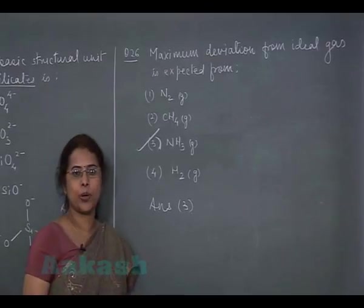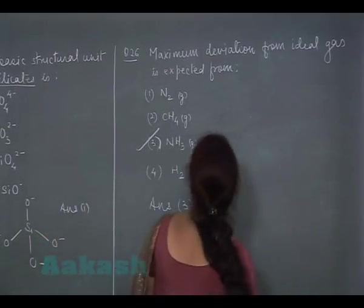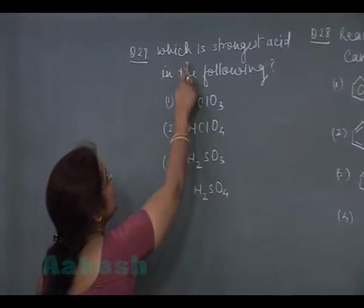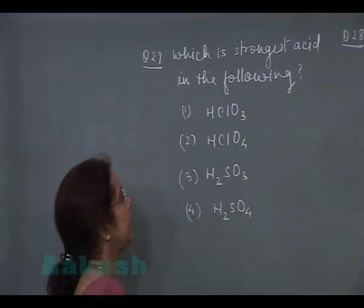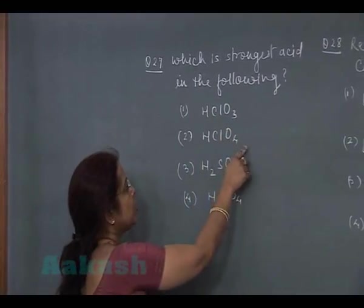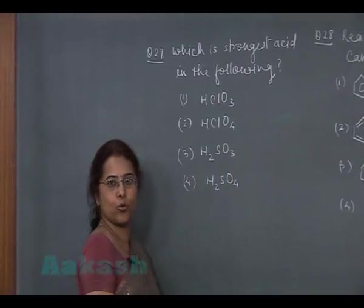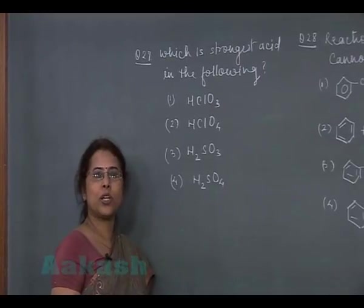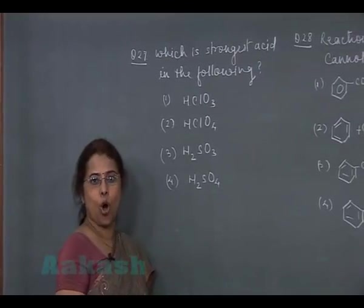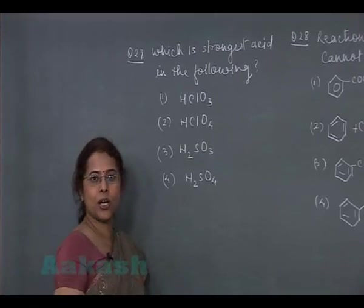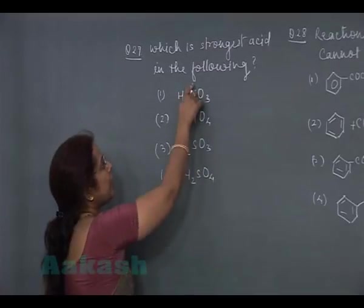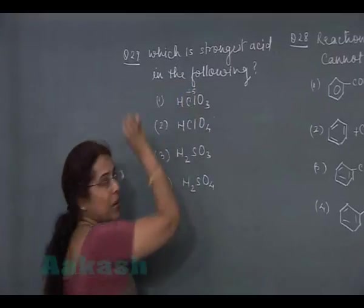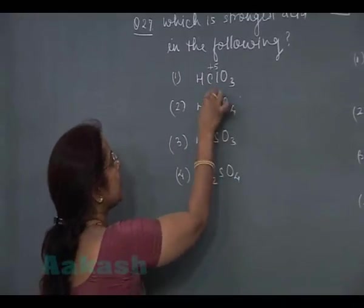Next question is question number 27. Which is strongest acid in the following? HClO3, HClO4, H2SO3, H2SO4. Now Chlorine is more electronegative than sulfur. It means Chlorine is more non-metallic than sulfur. So Oxyacid of Chlorine is more stronger acid than sulfur Oxyacid. Now in these two options. In first option, Chlorine is present in plus 5 oxidation state. While in second option, Chlorine is present in the plus 7 oxidation state.